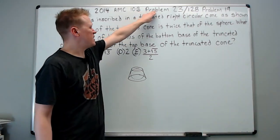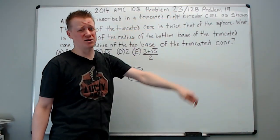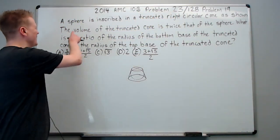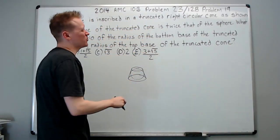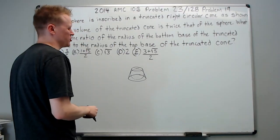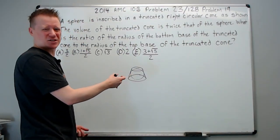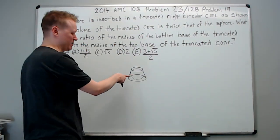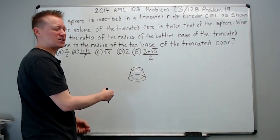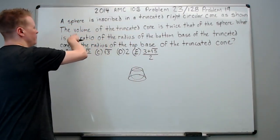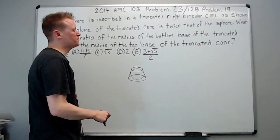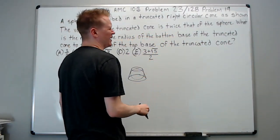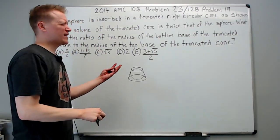2014 AMC 10B problem 23, it was also the 12B problem 19. A sphere is inscribed in a truncated right circular cone as shown. They have a much better picture because they have computer graphing imagery. I've drawn kind of what it looks like. The volume of the truncated cone, which by the way is called a frustum, is twice that of the sphere.